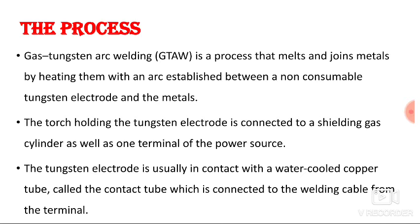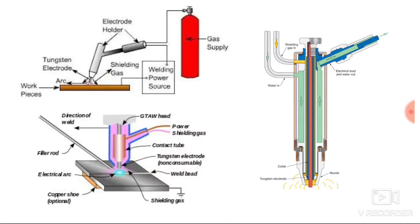The torch holding the tungsten electrode is connected to a shielding gas cylinder as well as one terminal of the power source. One terminal is connected to the electrode, which also has the facility of shielding gas to protect the weld metal from the environment. The tungsten electrode is in contact with a water-cooled copper tube called the contact tube, which is connected to the welding cable from the terminal.